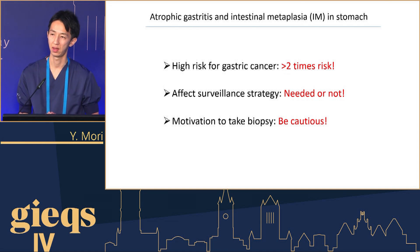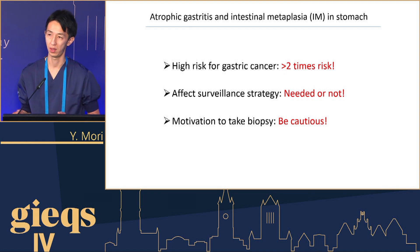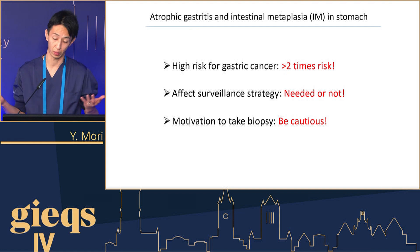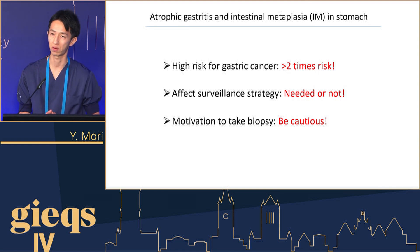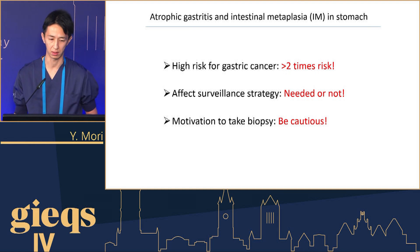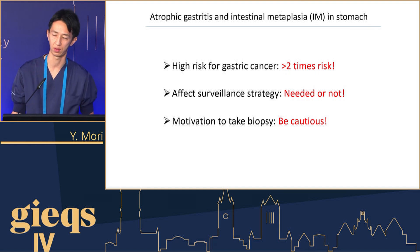The second point is that this kind of condition may affect the surveillance interval — maybe one year, two year, or zero year, meaning that you don't require any surveillance endoscopy. So it's quite important to identify the status of atrophic gastritis and IM. And if you identify the high-risk condition for gastric cancer, you should be very much motivated to take an accurate biopsy based on accurate optical diagnosis. These three points are what we would like to emphasize in this session.